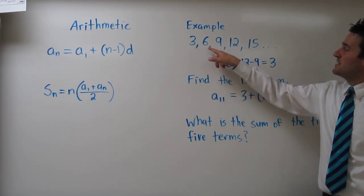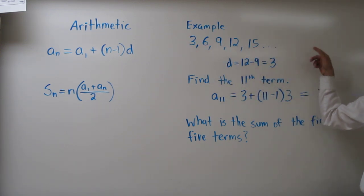So if we were to continue this sequence all the way to our 11th term, it would be 33. Now what is the sum of the first 5 terms? This is actually called a series. When you add everything up in a sequence, it becomes a series.